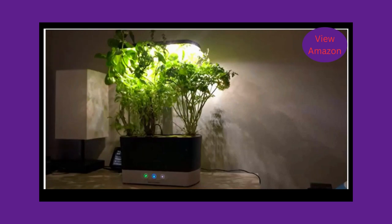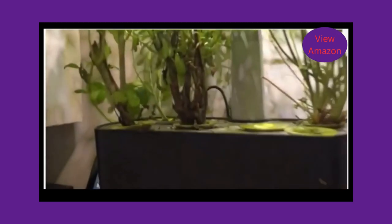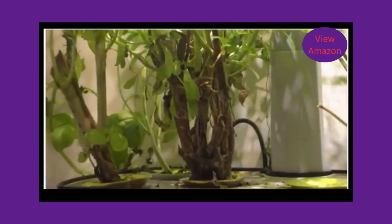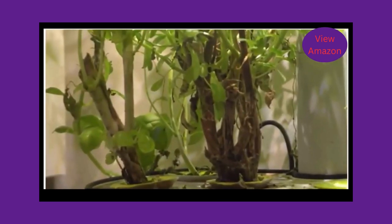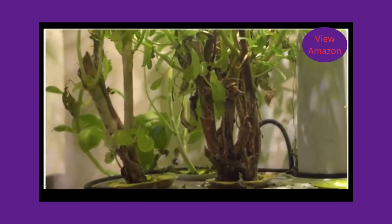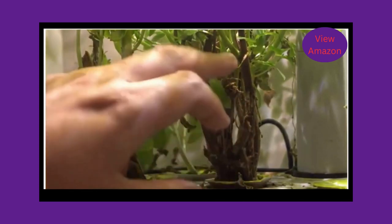About this item: Includes Gourmet Herb Seed Kit - six pod Genovese basil, curly parsley, dill, thyme, Thai basil, and mint, and a three ounces bottle of our patented all-natural plant nutrients, enough for a full season of growth.